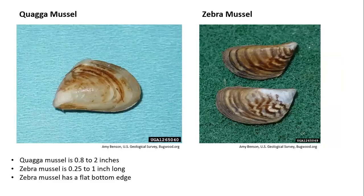Quagga mussels and zebra mussels — you're probably going to see these as well. They can sometimes be hard to tell apart, but quagga mussels are a little bigger than zebra mussels. Zebra mussels usually have a flat edge, so they can almost stand up straight if you try to lay them flat, whereas the quagga mussel will tip over because it doesn't have that flattened bottom.